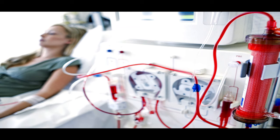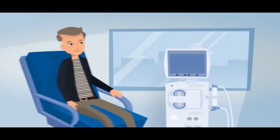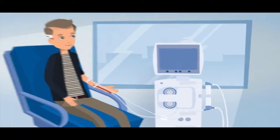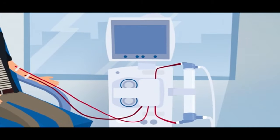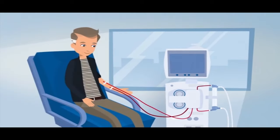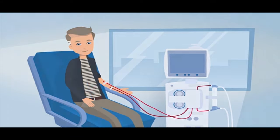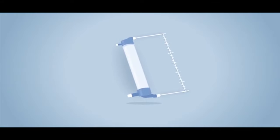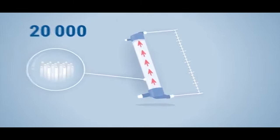Hemodialysers are used in extracorporeal renal therapies for removal of uremic solutes and excess plasma water from the blood of patients with kidney failure. It works on the principle of dialysis, which is the diffusion of small solute molecules through a semi-permeable membrane. Blood is removed from the body and pumped by a machine outside the body into a dialyser. Blood from the patient is circulated through a synthetic extracorporeal membrane and returned to the patient.